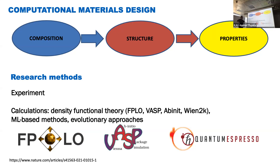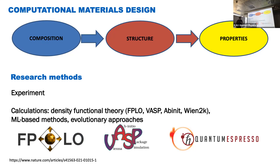Composition is just the name of the chemical elements — you know that the material is composed of, say, carbon, oxygen, nitrogen. But you don't know how they connect to each other. Structure is how these elements connect to each other. Structure is the most important thing in material science and in our course, because from structure we can obtain properties. The main thing we can calculate from structure is the energy of the material.